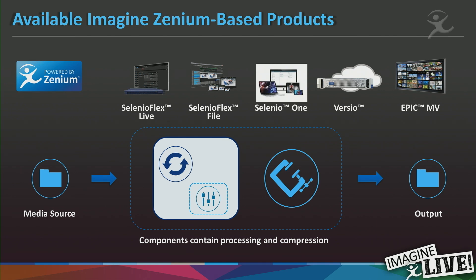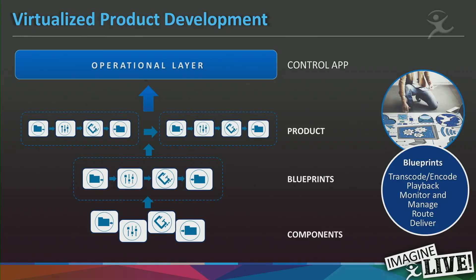For example, we have linear encoder solutions with Selenio Flex Live and Selenio One, file-based processing with Selenio Flex File, multi-viewers with our Epic multi-viewer, and broadcast playout servers with our Versio platform. These are all products powered by the underlying Xenium framework. They look at this catalog of over a thousand components, chain them together to produce what we call a blueprint — a definition of how components are connected — and put a control plane, user interface, and automation on top.